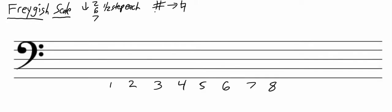If the second, sixth, or seventh note is natural, we're going to change it to flat for the Fregish scale. And if the second, sixth, or seventh note is flat, we will not use that scale. We may use an enharmonic version in order to avoid having a double flat.